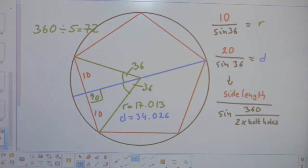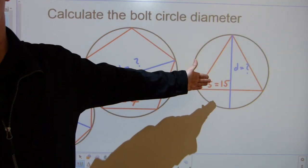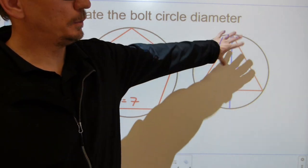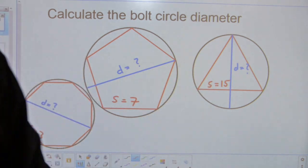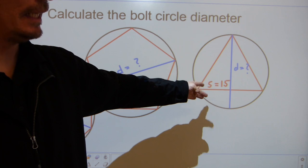By this analogy, if you have a triangle, a triangle divides the circle into three chunks of 120 degree angles. Half that is 60. So the calculation for this would be 15 divided by sine 60.